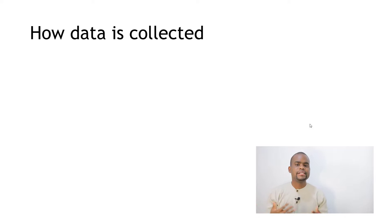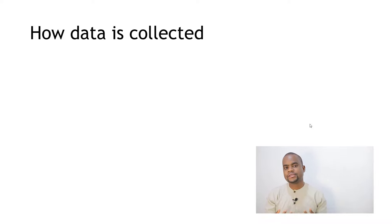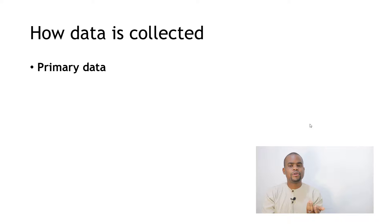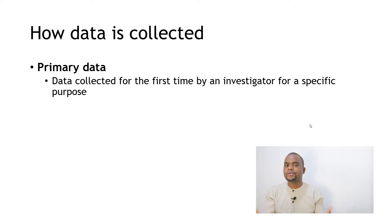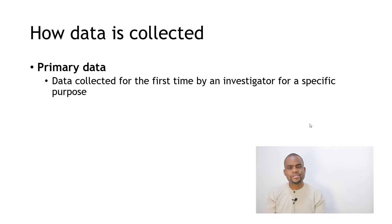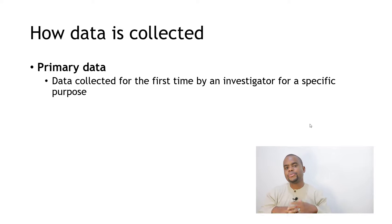Now let's look at how data is collected. There are two main ways. The first is primary data — data collected for the first time by an investigator for a specific purpose. If you go to respondents or students and ask questions firsthand, or collect data from your own experiments in real time, that's primary data. It has no statistical operations done on it — it's raw, just collected from respondents.